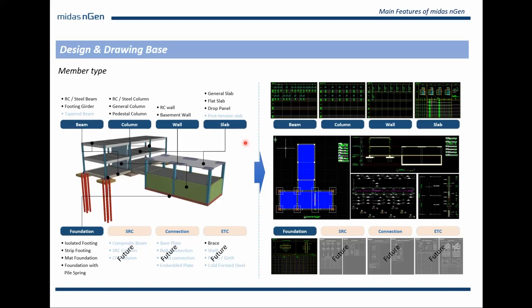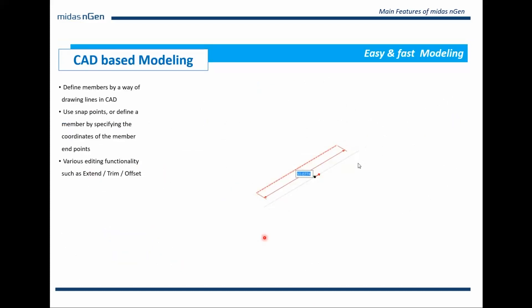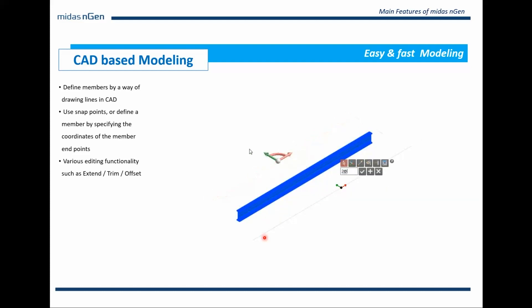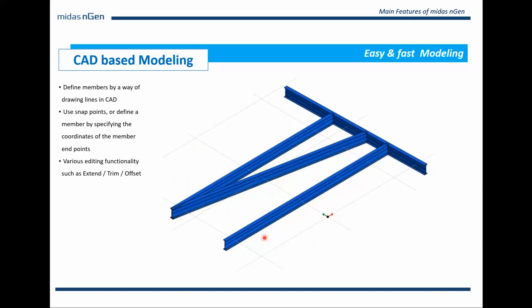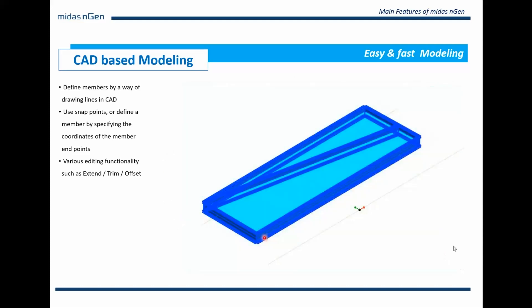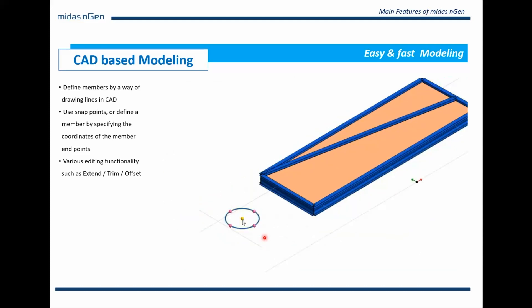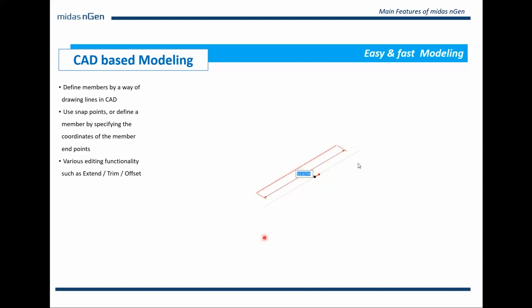Various member objects such as beam, column, walls, slabs, mat, flat slabs, and basement walls have been created for easy modeling and design. Modeling using CAD tools like translate, copy, extrude, extend, trim, and offset makes it very easy to model in Midas Engine, and people already comfortable with AutoCAD will find it very easy.